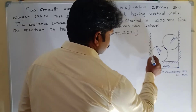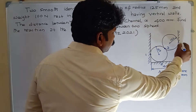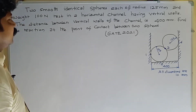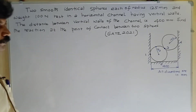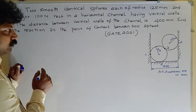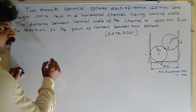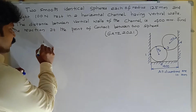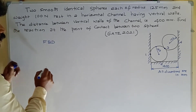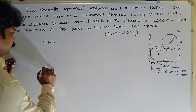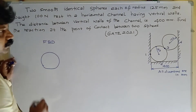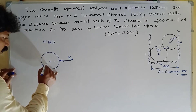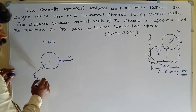Our aim is to find the reaction between the two contact points between two spheres. First, give names to all contact points: one, two, three. Our aim is to find the reaction at point three. Draw the free body diagram of the top sphere — the sphere having contact points three and four. Our aim is to find reaction R3, so isolate the body from the surroundings. The free body diagram shows reaction at point four (R4), reaction at point three (R3), and the weight of the sphere.